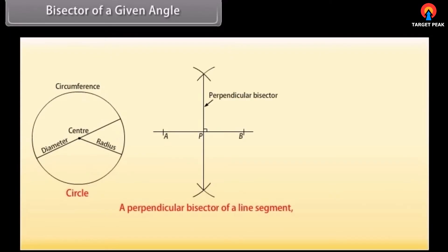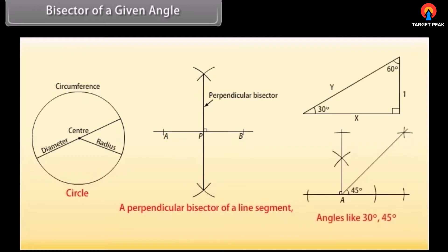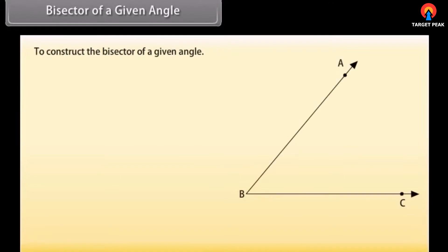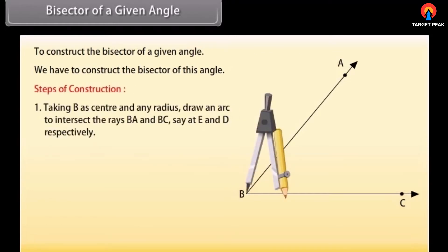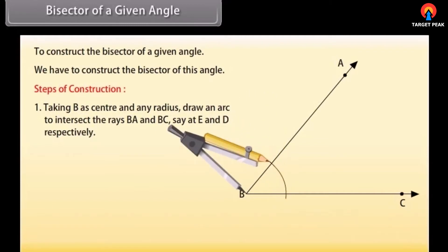Bisector of a given angle. Friends, we know how to construct a circle, a perpendicular bisector of a line segment, and angles like 30 degree, 45 degree. Now we will learn to construct the bisector of a given angle. Let us take an angle ABC. We have to construct the bisector of this angle.